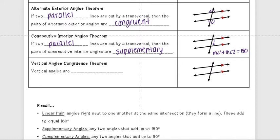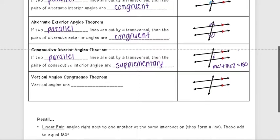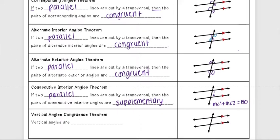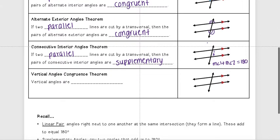Usually you can look at the picture and tell which ones are going to be congruent. For instance, looking at alternate interior angles, both are a little bit small — you can tell they're the same. For the consecutive interior angles, you can see that one angle is acute while the other is obtuse, so obviously they're not going to be equal.